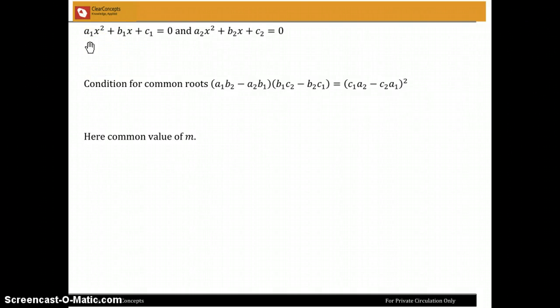So if I have A1X squared plus B1X plus C1 equal to 0 and A2X squared plus B2X plus C2 equal to 0, the condition that these two quadratic equations will have a common root is right here. This is directly from the class notes.